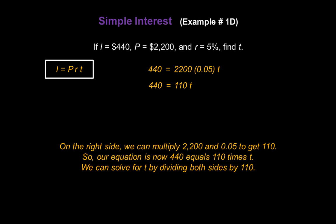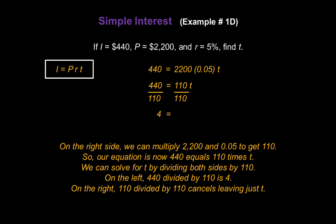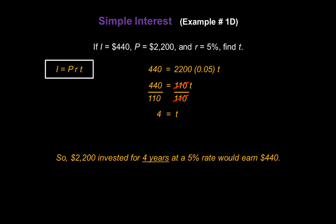We can solve for T by dividing both sides by 110. On the left, 440 divided by 110 gives us 4. And on the right, the 110s cancel, leaving us with T. So $2,200 invested for four years at a 5% rate would earn $440.